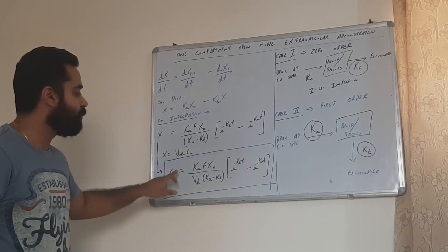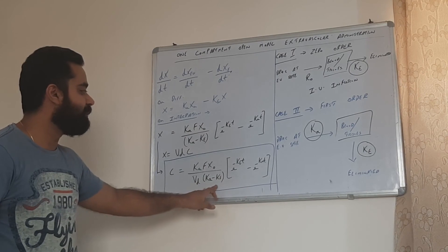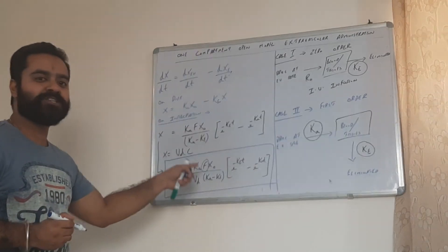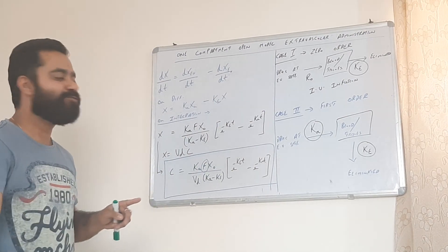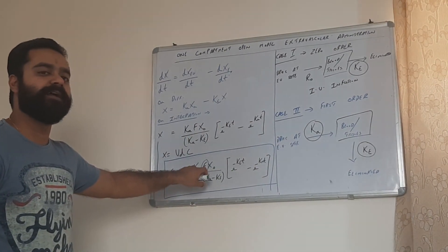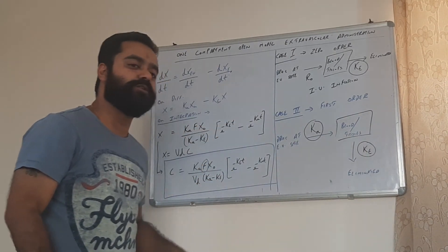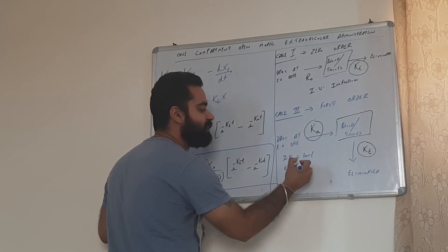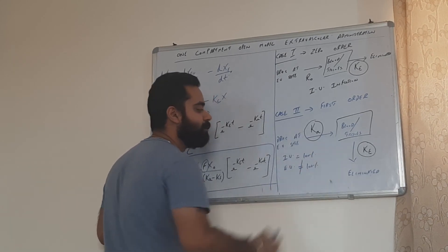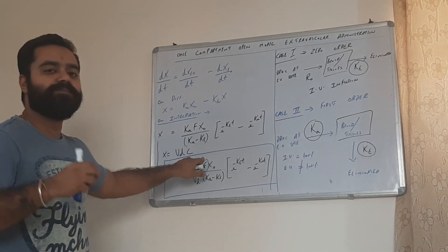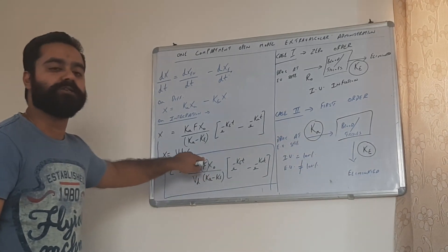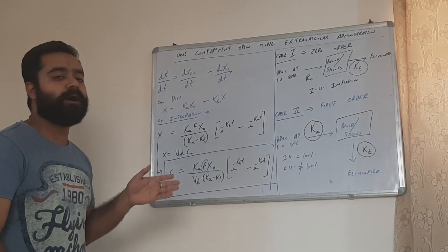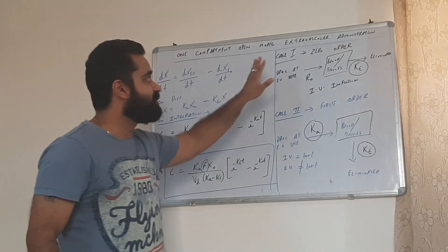This is the general expression: C equals Ka·F·x0 / (Vd · (Ka − Ke)) with that exponential expression. One more thing — what is F? F is the fraction of drug absorbed systemically. We include this term in extravascular administration because, in the case of IV, bioavailability was 100%, but in extravascular administration it is not going to be 100%. We have to determine the value of F, or the amount of drug which actually enters the systemic circulation. In the next class, we are going to learn about how to determine the pharmacokinetic parameters from extravascular administration.